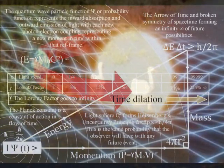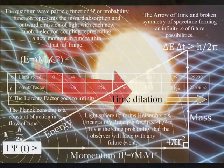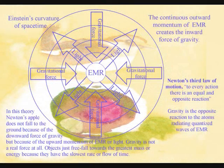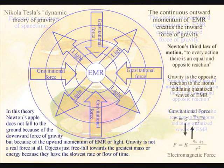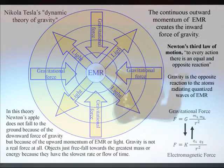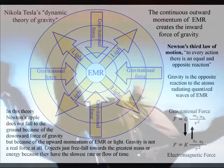Therefore, Newton's universal law of gravity is part of this process. In this theory, Newton's apple does not fall to the ground because of the downward force of gravity, but because of the upward momentum of electromagnetic radiation, or light. Gravity is not a real force at all — it is a secondary force to the electromagnetic force.